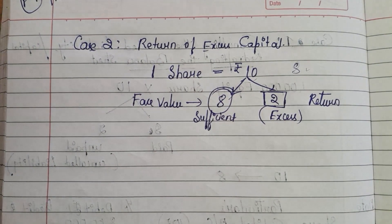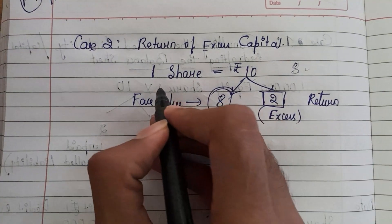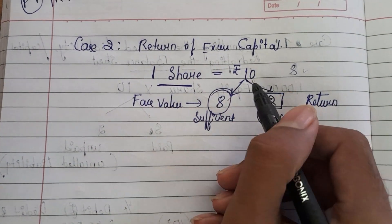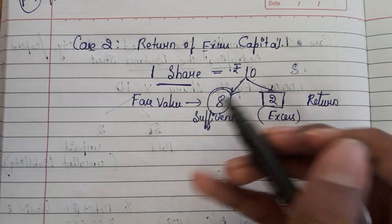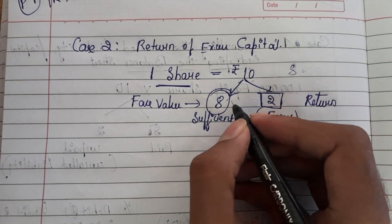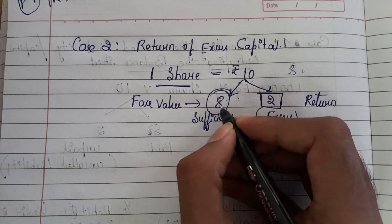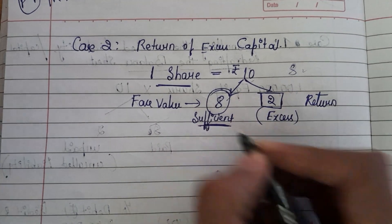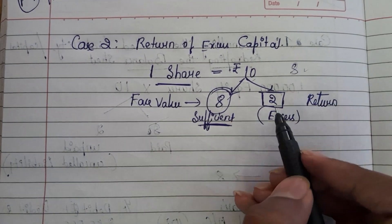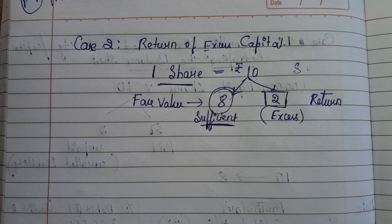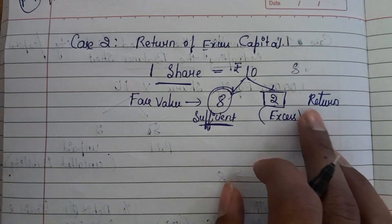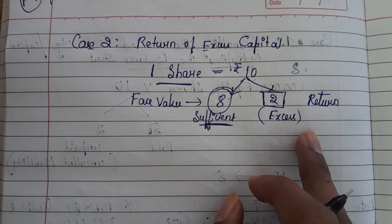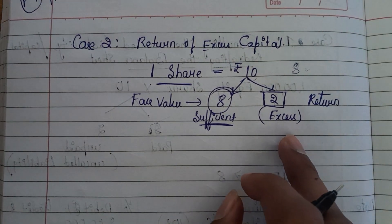So what is the return of excess capital? I have issued shares of 10 rupees in the market and collected 10 rupees, but only 8 rupees is sufficient. So I need to return the excess 2 rupees back to the shareholders. That is only returning the excess capital.